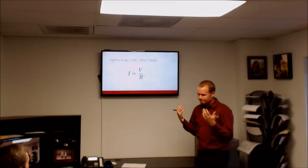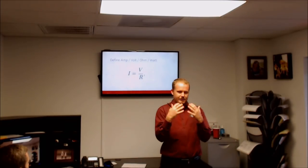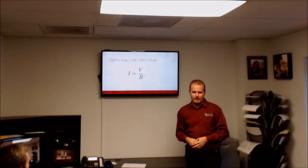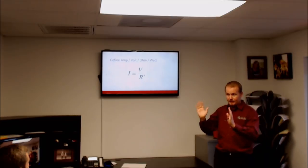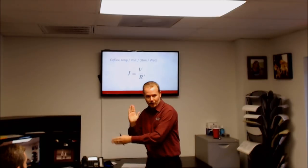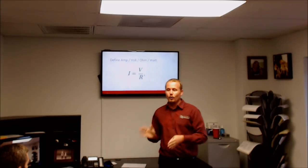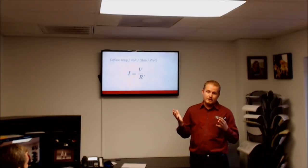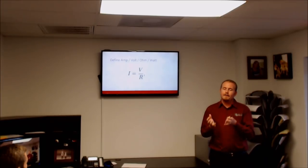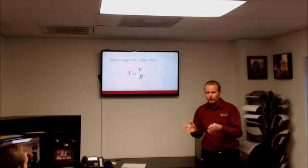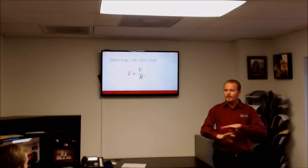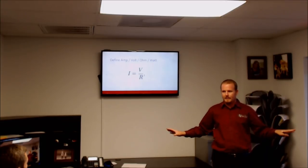Ohms is the resistance to the flow. Think of the road and a bottleneck — the cars have capacity to go so fast, but then the road narrows down to one lane and the cars have to go one by one. Ohms represents resistance: how much resistance to the flow of cars is there on this road. When you're talking about any type of conductor or circuit, really all that matters is the total resistance of that circuit.